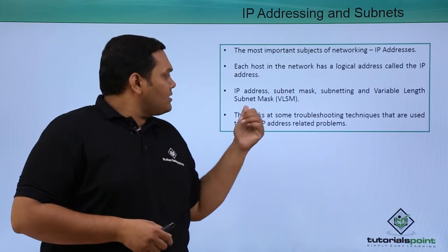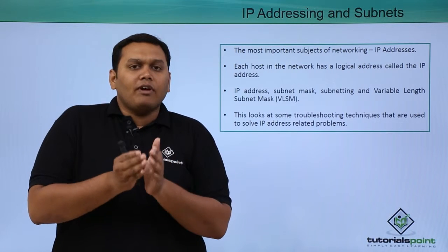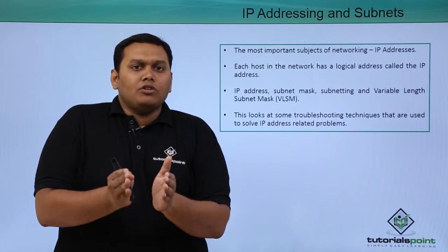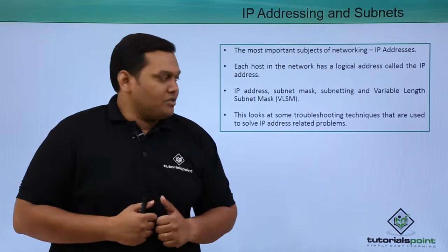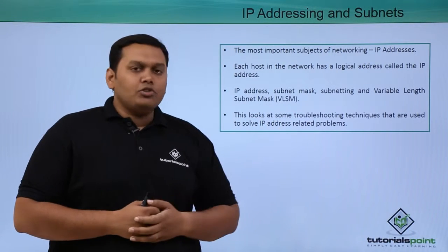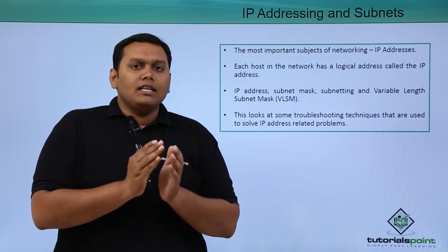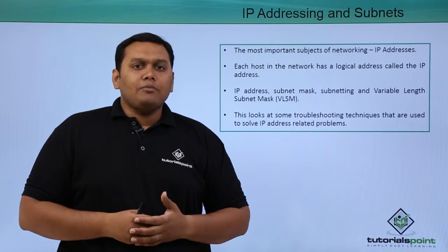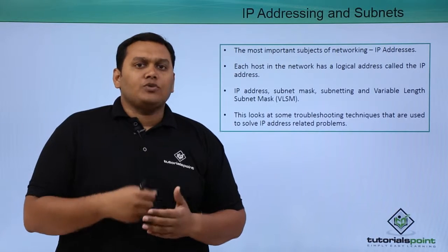Variable Length Subnet Mask (VLSM) is a process of dividing the IP address into multiple subnets depending on the requirement of the network, without wasting IP addresses. This also addresses troubleshooting techniques for IP addressing in the future, so that the network is maintained without any problem. In the next video, we will discuss the different types of IP addresses.